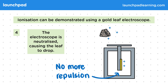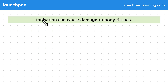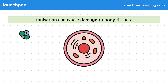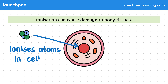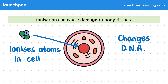Let's have a look at how ionisation links to the dangers of radioactivity. Ionisation can cause damage to body tissues. Here we have an example of a human cell coming into contact with an alpha particle. The alpha particle ionises the atoms in the cell. If the atoms in DNA are ionised, it can be very damaging, as it can lead to mutations or deficiencies — it changes the DNA. Cells can also be killed when hit directly by radiation, where the radiation acts like a bullet.